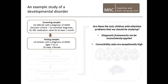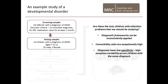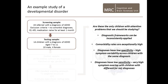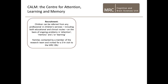Anyone who's studied developmental disorders will know that comorbidity rates are exceptionally high — comorbidity is the rule, not the exception. Screening out children who don't have alternative diagnoses in addition to ADHD means you're potentially massively skewing your sample. The diagnoses can have low specificity, with very high symptom variability across children with apparently the same diagnosis, and they can also have low sensitivity, with very high symptom overlap with children who have different or no diagnoses. Constraining your research design by a diagnostic framework can be limiting.